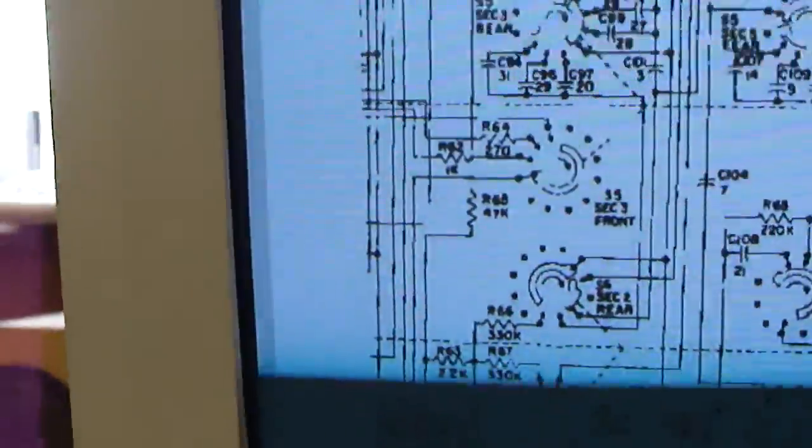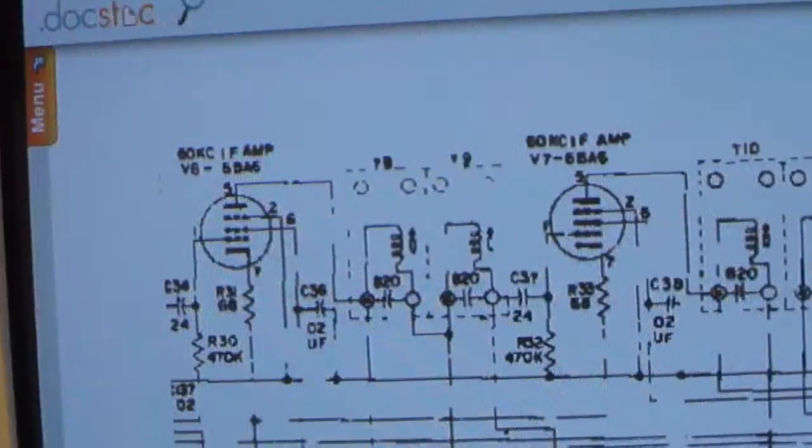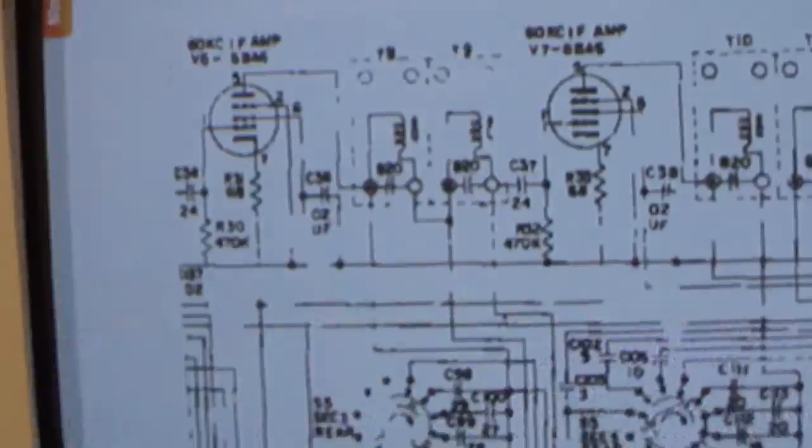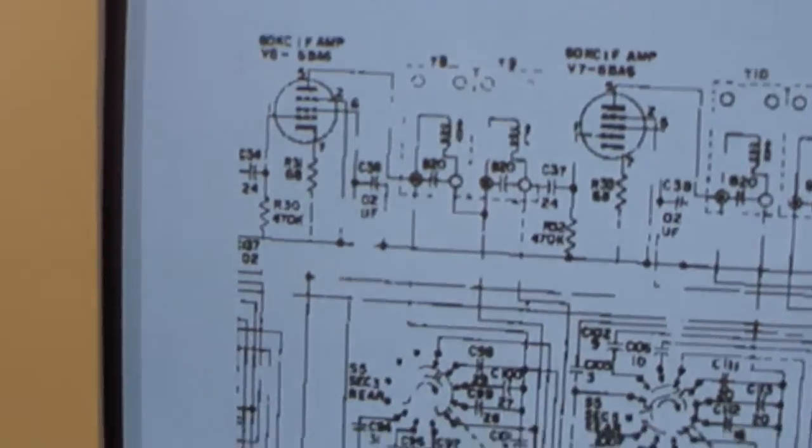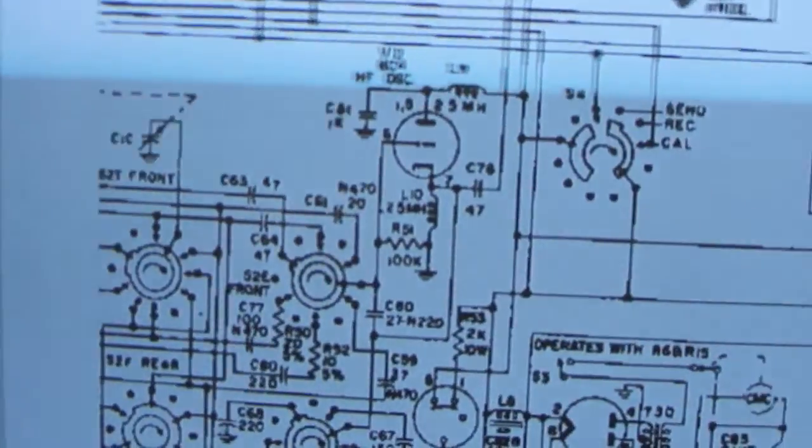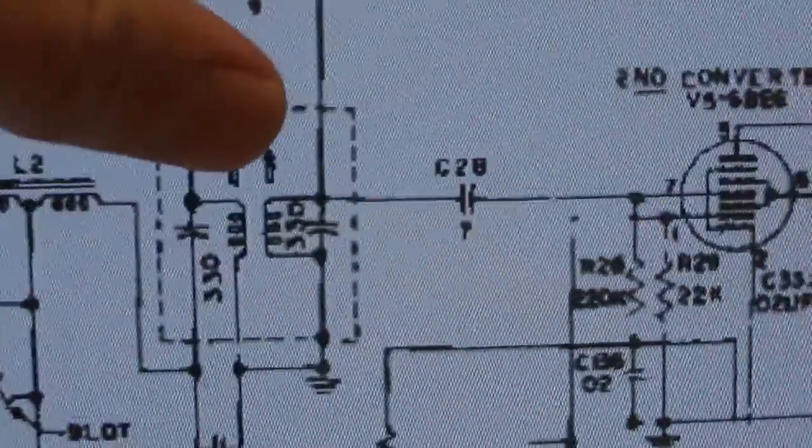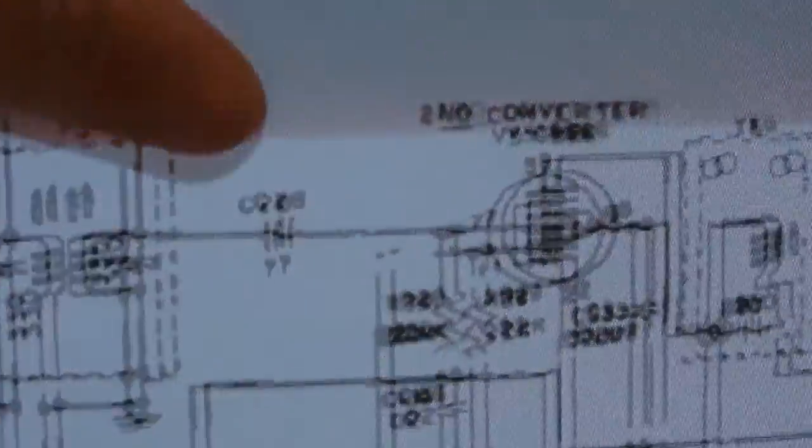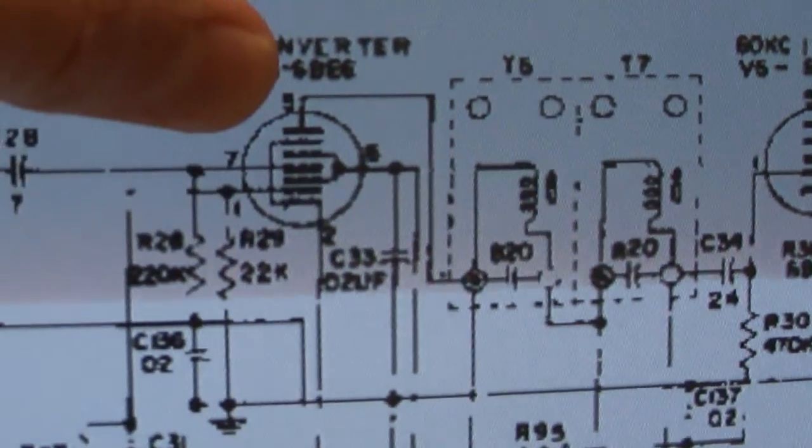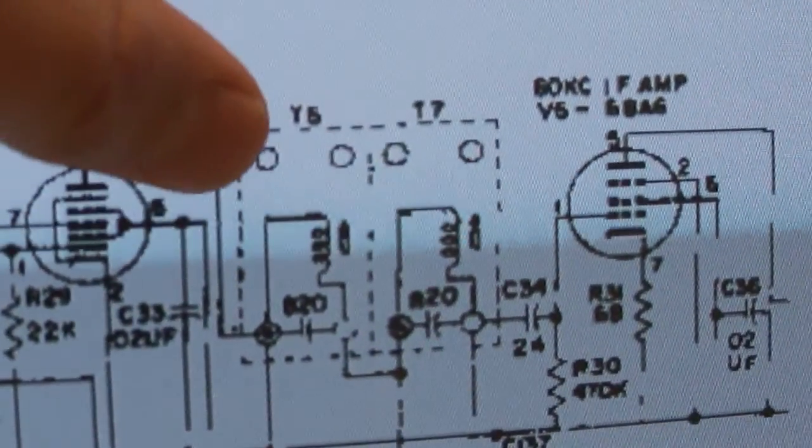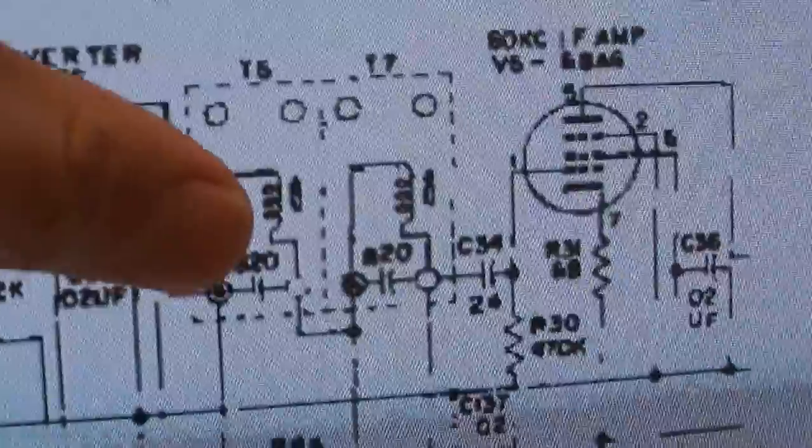So it goes into a... somewhere there's another converter in this to convert it from 455 kHz to, there it is. So it goes to a 455 kHz amp into another IF can, and then yet a third IF can, and yet another one. Then it goes to another converter to convert it to 60 kHz. And then these IF cans look like they just got one cap in them.